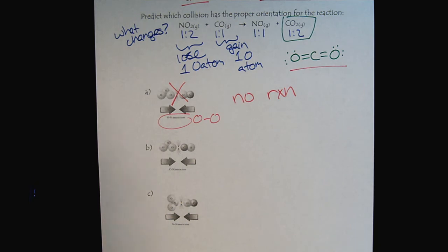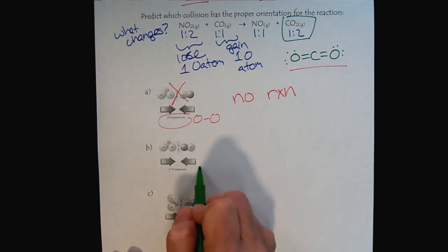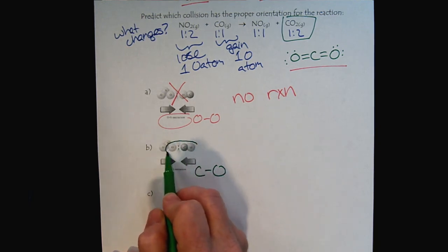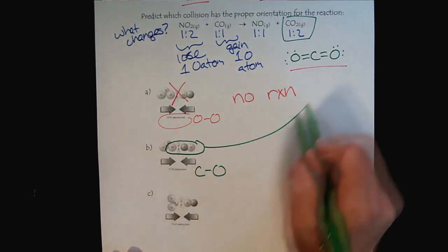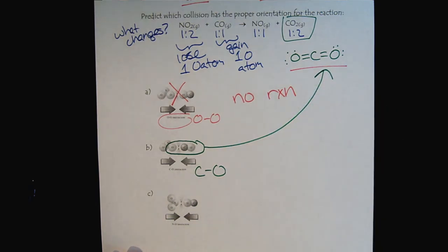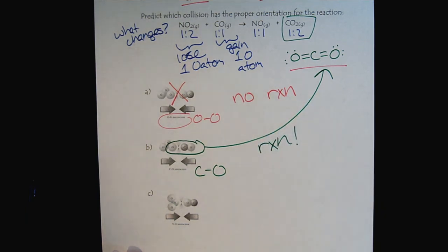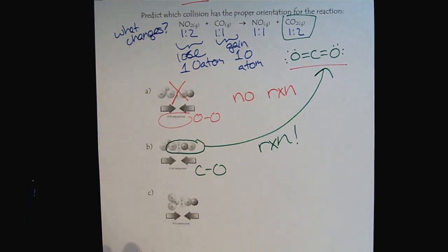When we look at the next example though, we see that we have a carbon to oxygen interaction. And notice that this interaction gives us the correct alignment to produce our product. So this would be correct, we would get a successful reaction here because we have the proper orientation.